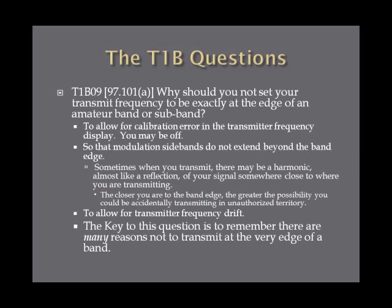Why should you not set your transmit frequency to be exactly at the edge of an amateur band or subband? There are many reasons. First, your calibration on your transmitter could be off, setting the signal outside where you think it is. Another reason is harmonic frequencies or sideband modulations that act like a reflection of your signal, so you could be transmitting at a harmonic frequency somewhere else in the spectrum. Third, some transmitters drift a little bit, so your transmitter could slide up and down the spectrum while transmitting. The key to remember is that there are many answers to this question.